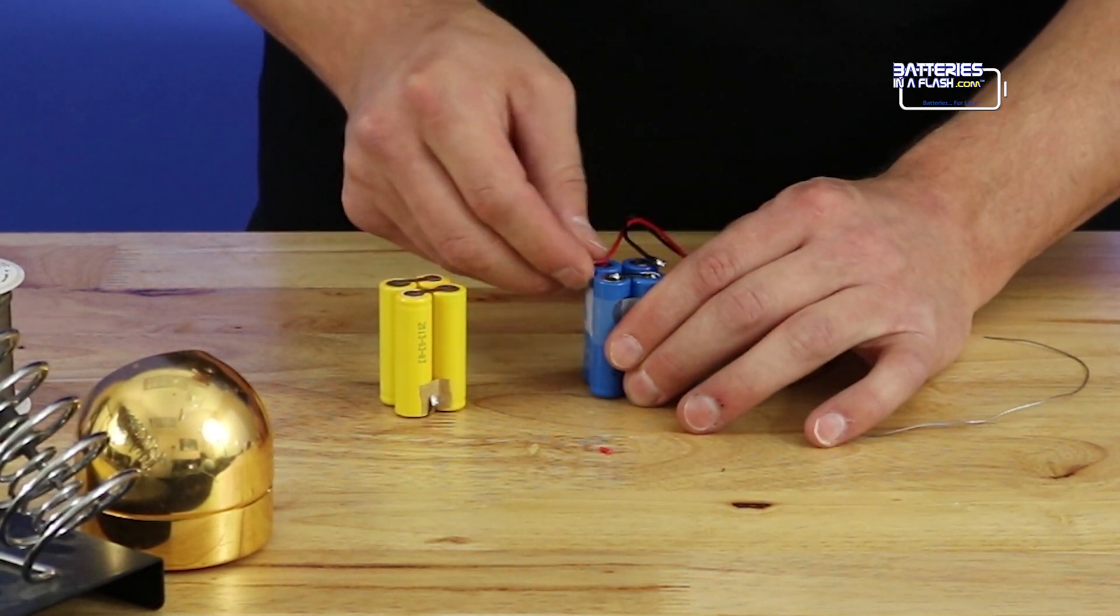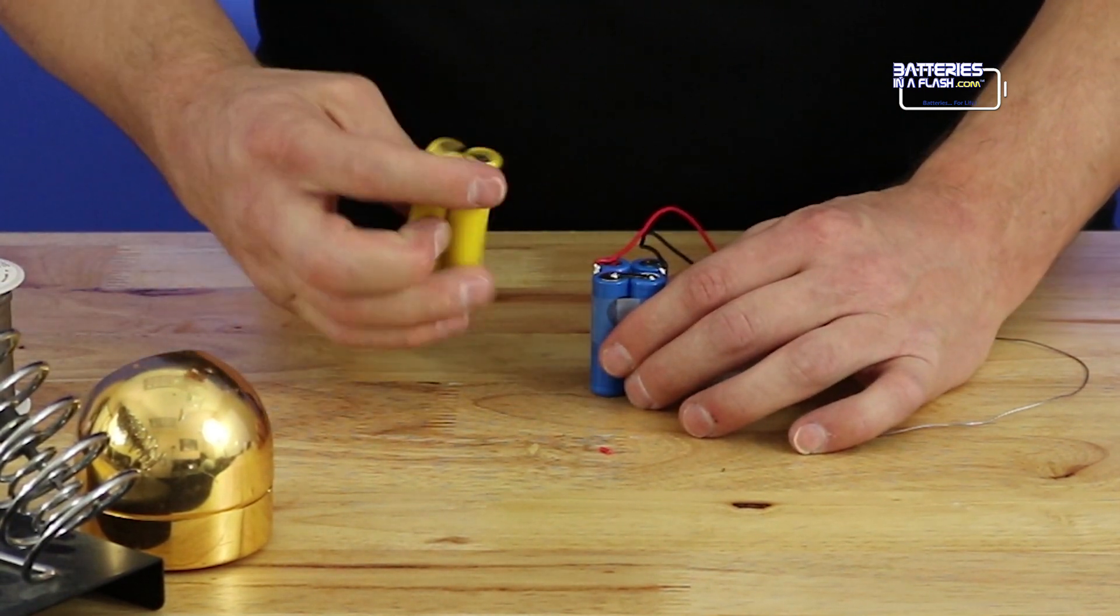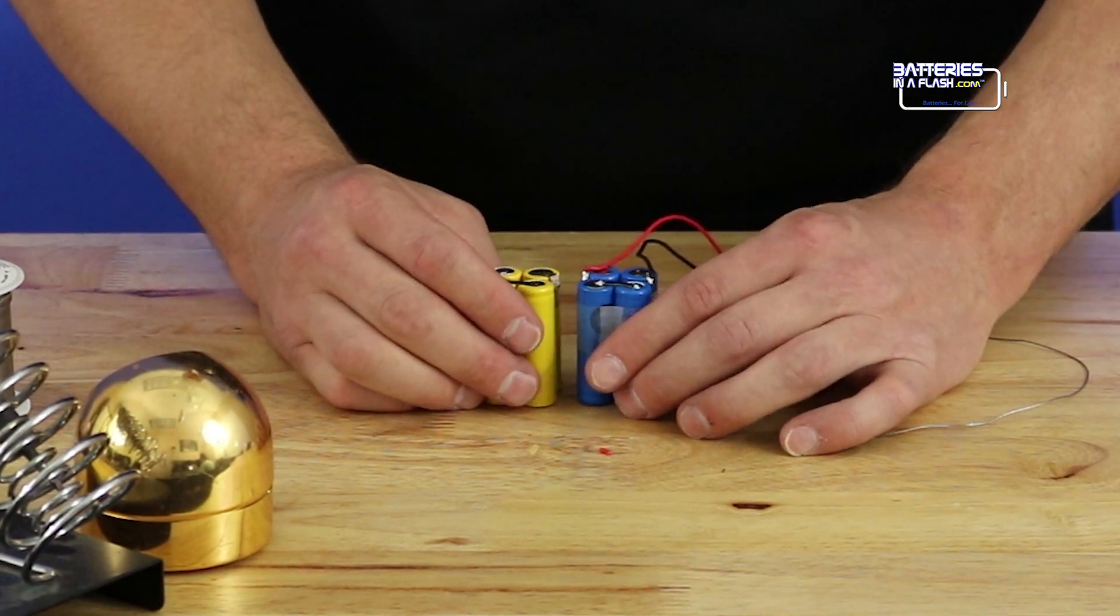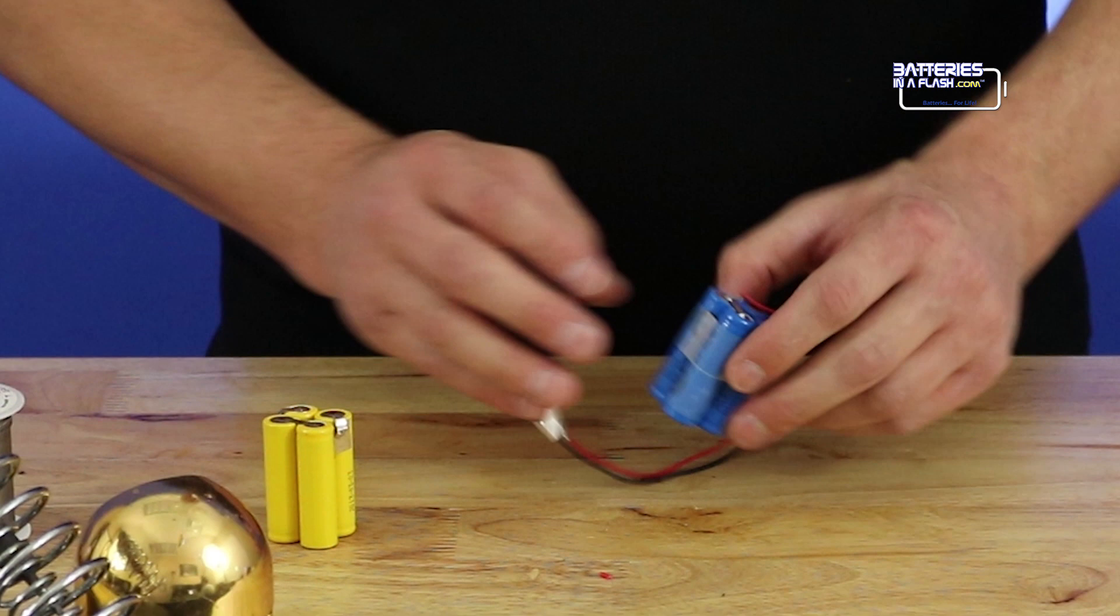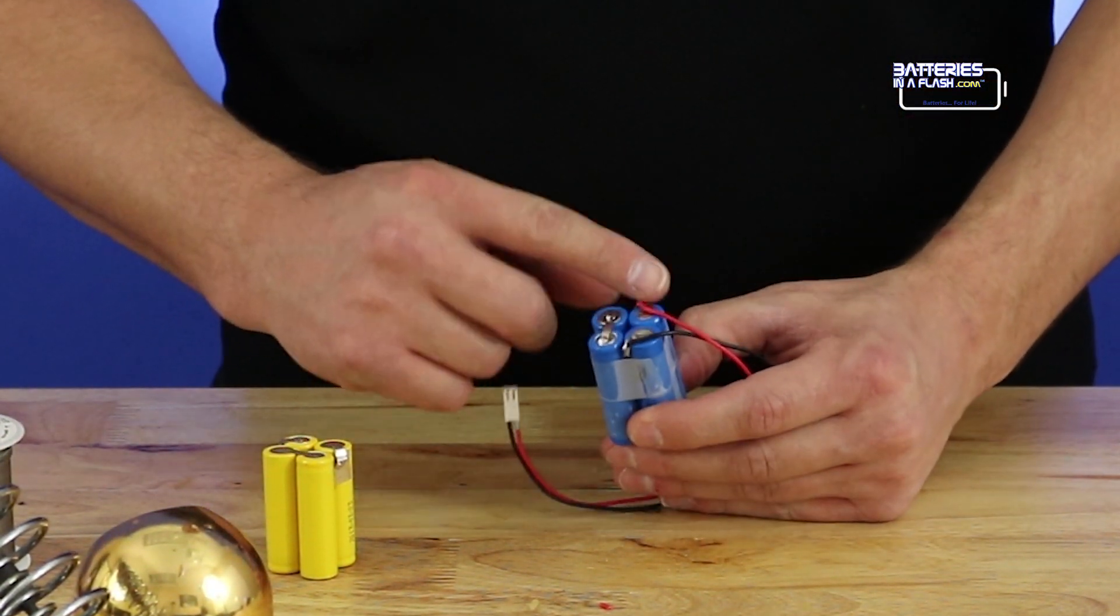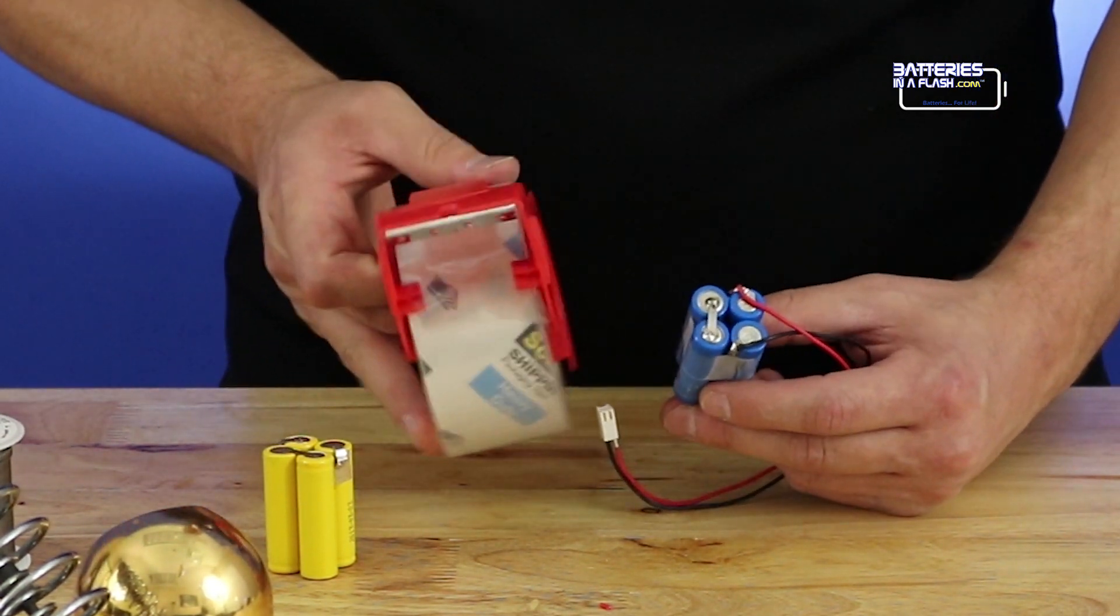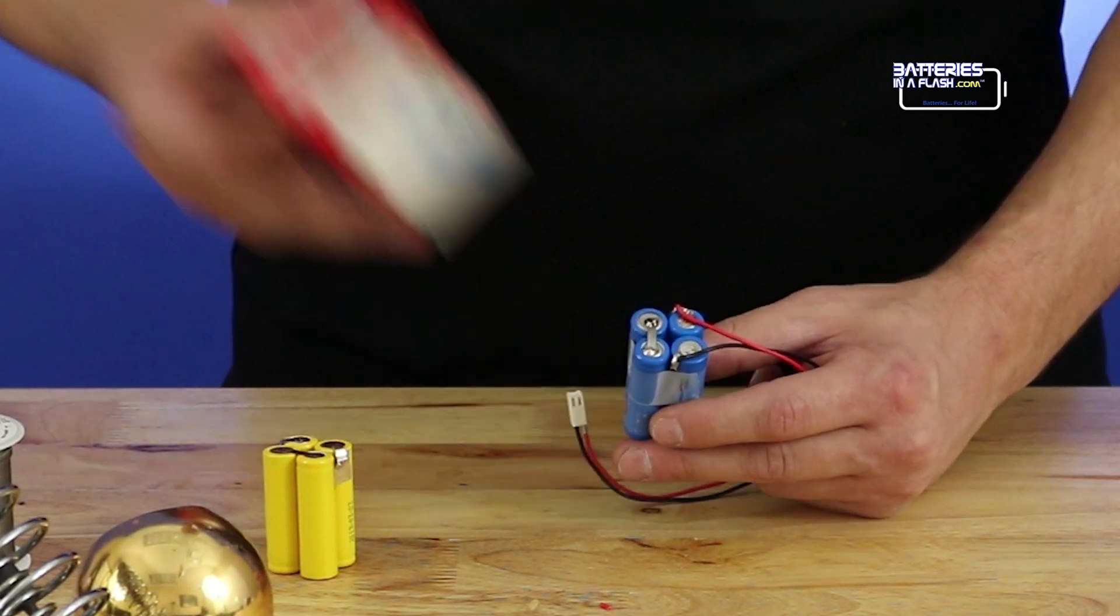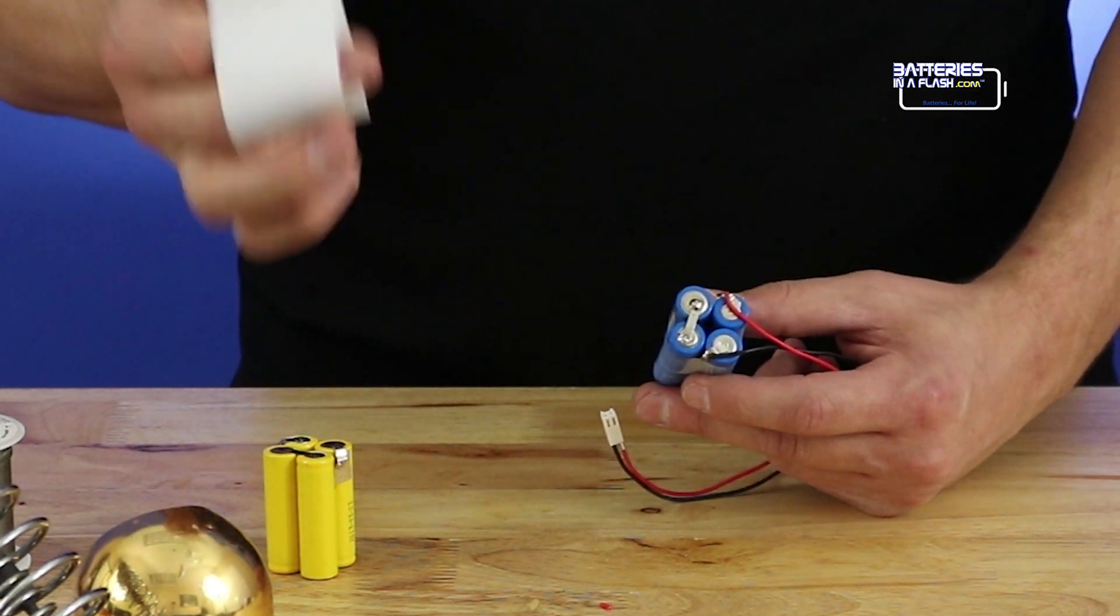So, now that we've got this pack built, all we need to do is make sure these terminals are no longer going to be a hazard. This isn't the pretty way, this is the do-it-yourself way. You can either use some kind of tape like packing tape or duct tape. The other thing you can do is go onto eBay and get heat shrink.